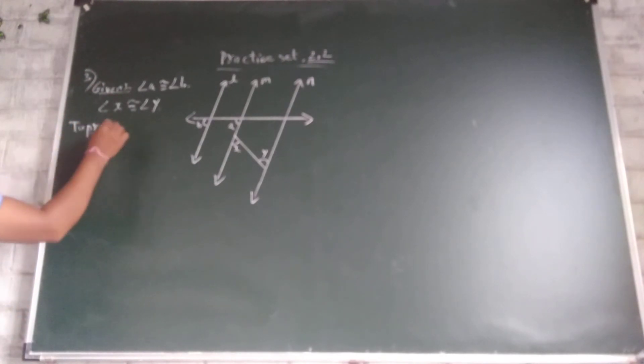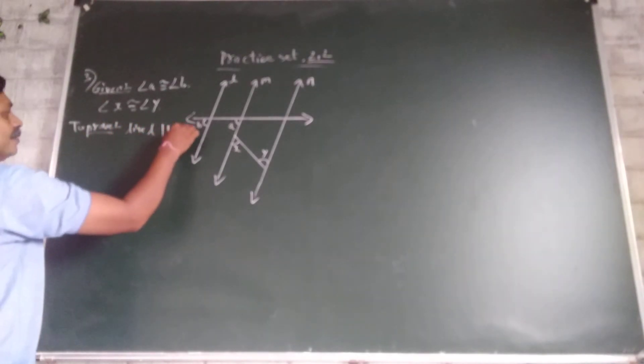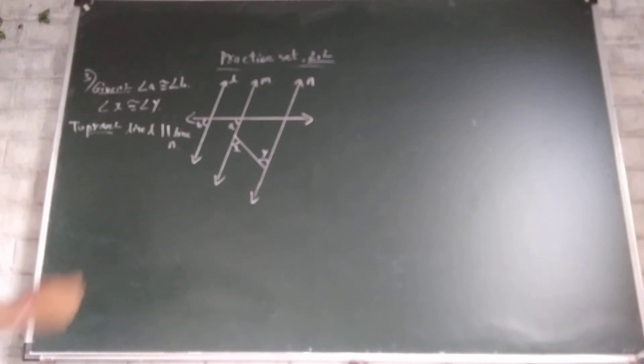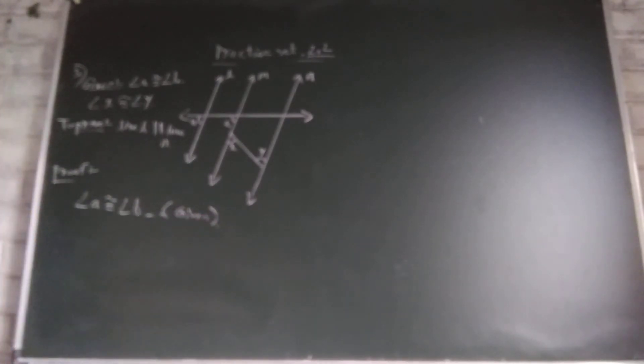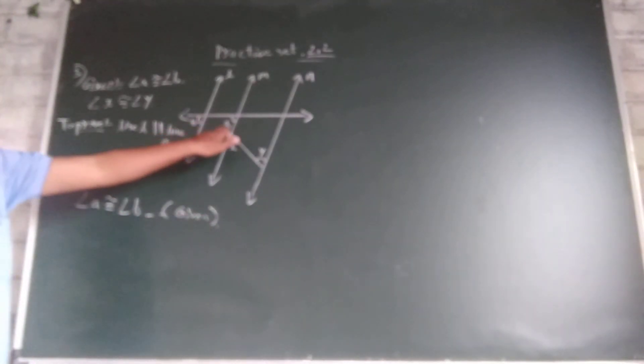Line L parallel to line M, what to prove. Now prove, angle A congruent to angle B given. These two lines are congruent by corresponding angle.